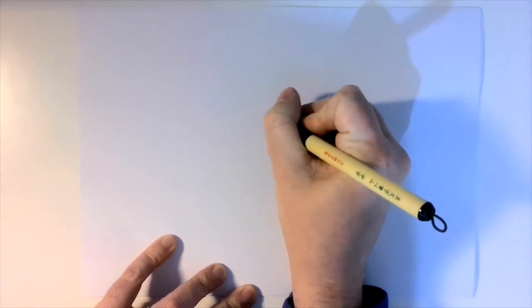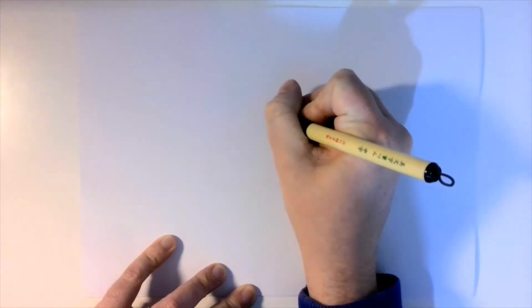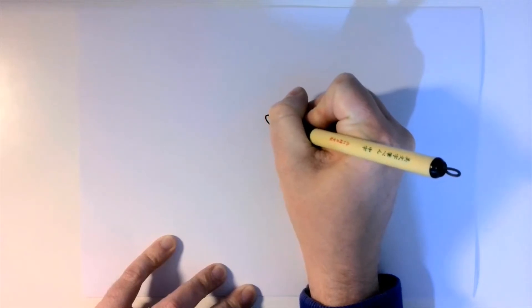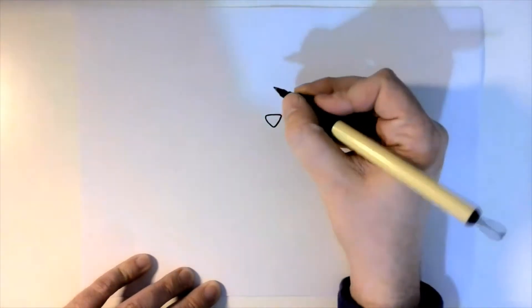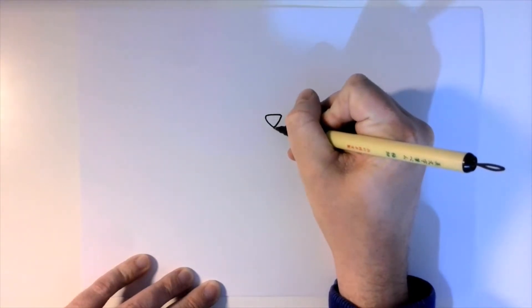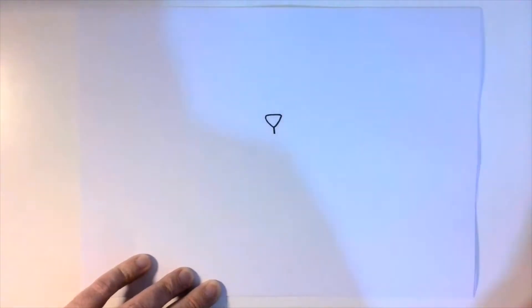We're going to start with this shape here, a bit like a rounded triangle. It's going to go out like that and then round to this point and up to here. That's the first part of our cat. If you guessed nose, you're absolutely right. From the bottom of the nose is going to be a short line down like this, and I'm going to leave it like that for now.